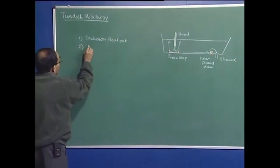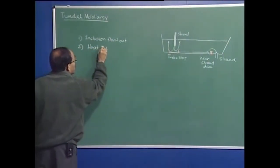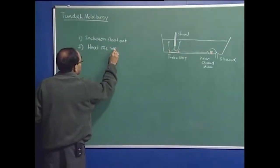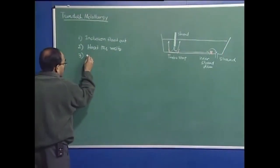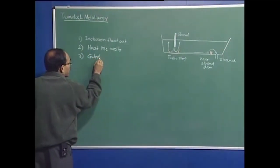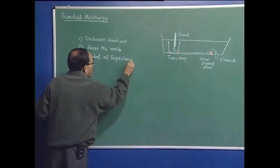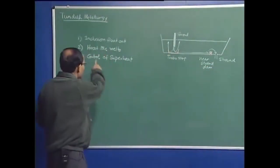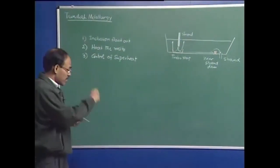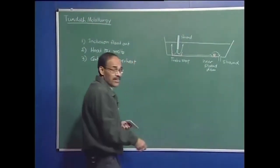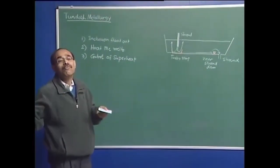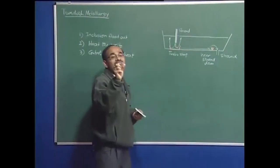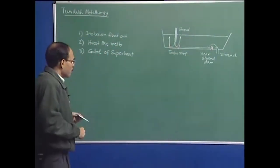Secondly, we would like to heat the melt to increase its temperature if there is a significant drop during the previous processing steps. We can also control superheat — these are essentially one and the same thing. Today we all know that superheat has a tremendous bearing on the quality of cast products. The microstructure of steel is controlled by superheat, and it is not desirable to have large superheat in the continuous casting Tundish, because then you have to slow down the casting rate to allow sufficient dwelling within the mold, otherwise you will have a very thin shell.